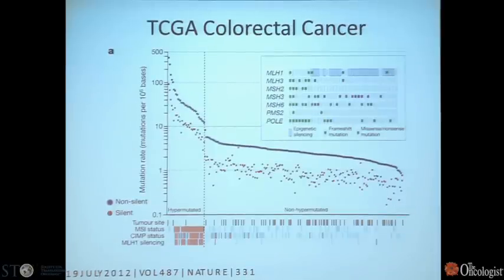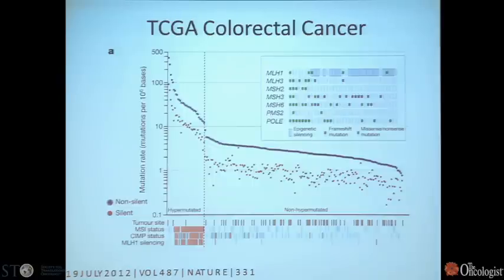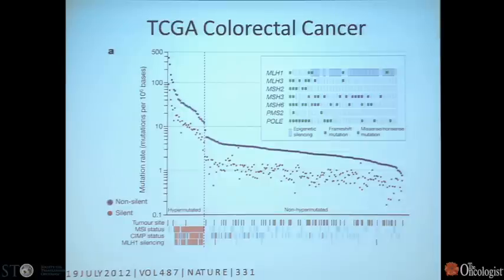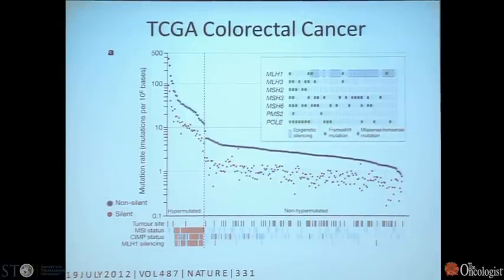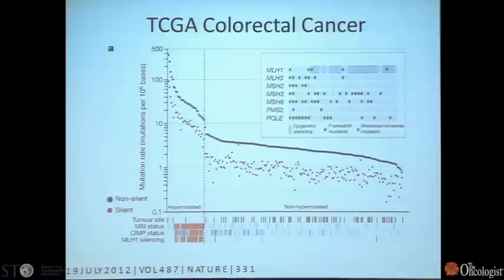This is an important subclass of colon cancer, and this has been confirmed recently by the TCGA analysis of colon cancer — UNC played a major role in this effort. Here you see the number of mutations per million bases in about 225 colon cancers. There's a pretty distinct difference between non-hyper mutated and hyper mutated tumors. The majority of hyper mutated tumors are MSI high, and this correlates with a CpG island methylator phenotype with silencing of MLH1, one of the mismatch repair genes.